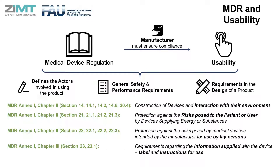Moving on to the usability requirements regarding the design and manufacture of a product, Annex 1, Chapter 2 of the MDR states that particular attention must be paid to the construction of devices and interaction with their environment, such as protection against the risks posed to the patient or user by devices supplying energy or substances, and also protection against the risks posed by medical devices intended by the manufacturer for use by laypersons. Annex 1, Chapter 3 of the MDR then speaks to the requirements regarding the information supplied with the device, and describes how labels and instructions for use should be written. Please note, relevant sections are written in brackets.